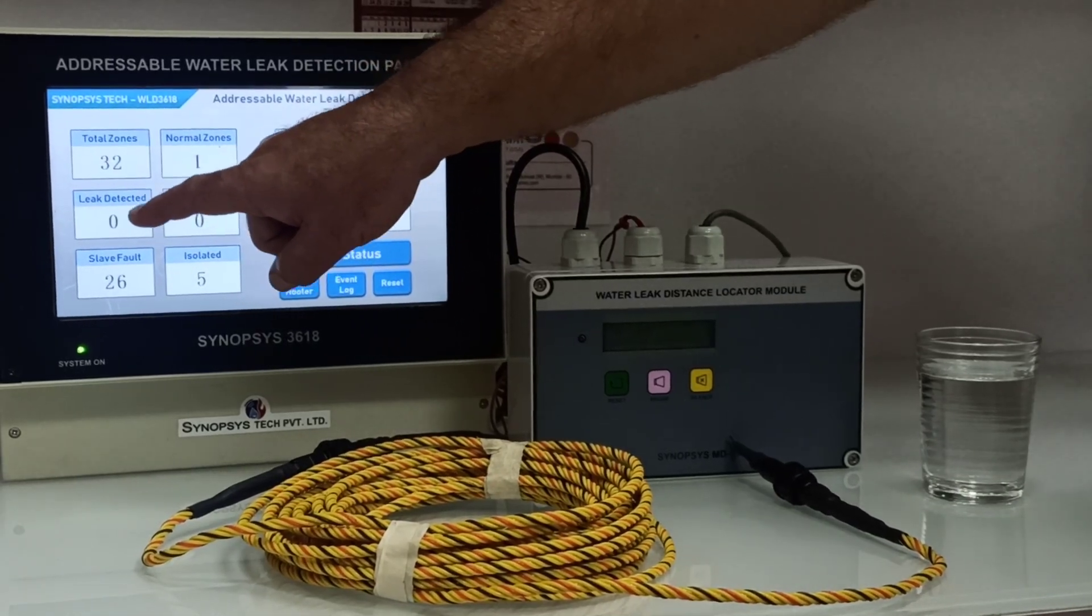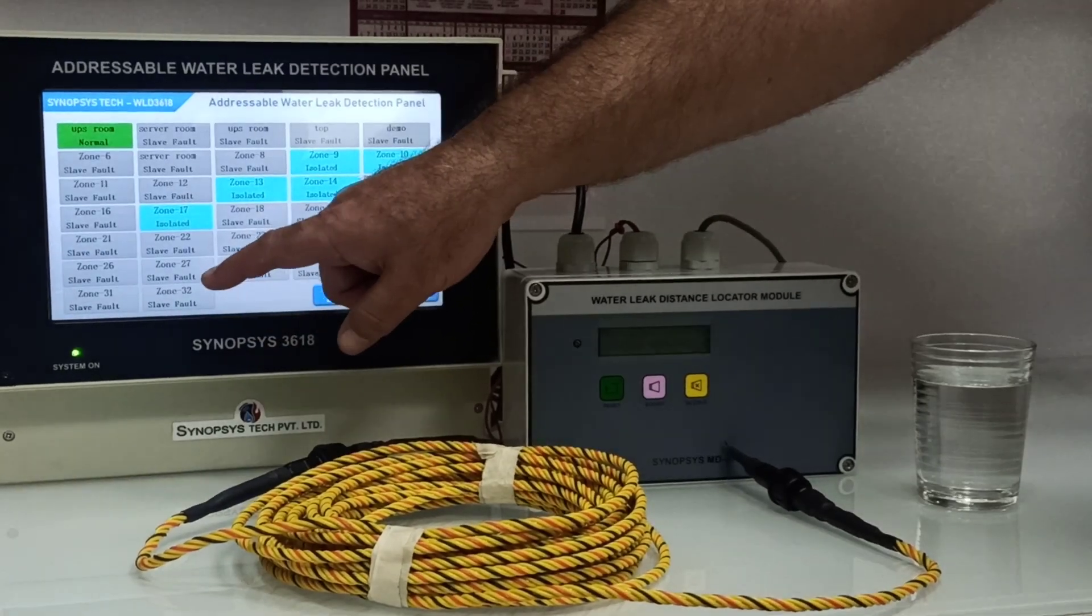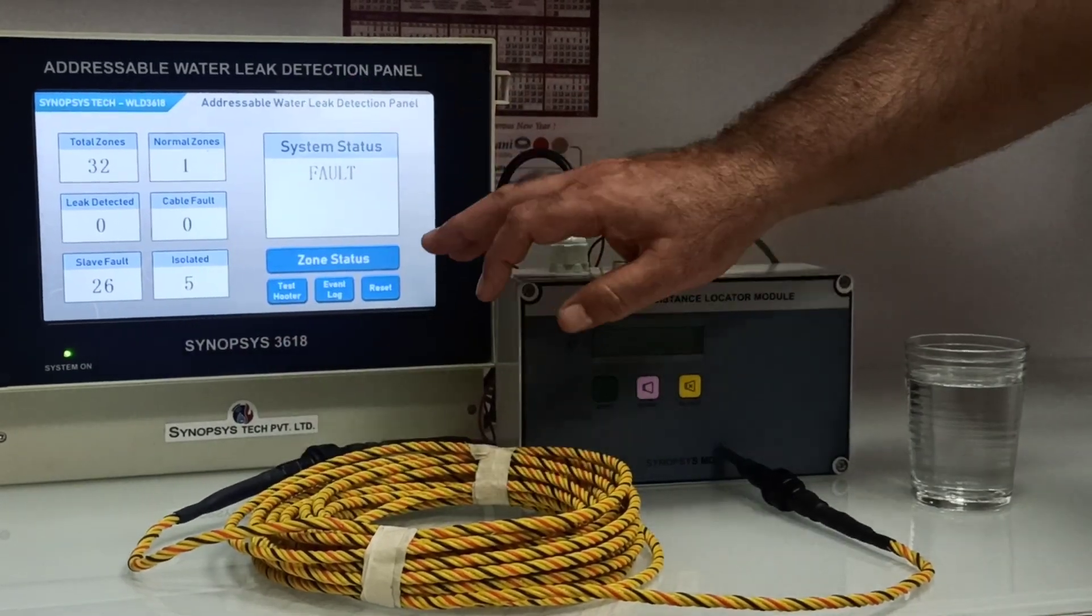Leak has not been detected in any of the zone. No cable fault. Slave fault there is 26 and 5 we have isolated - 5 zones we have isolated.